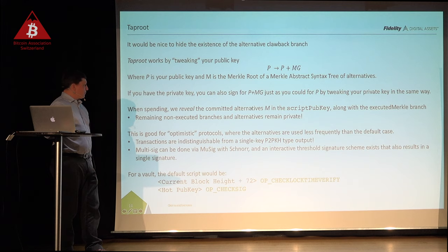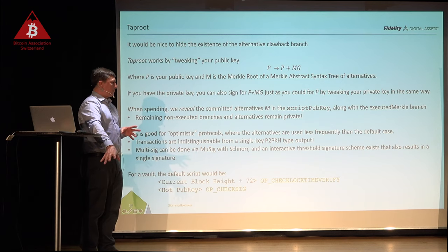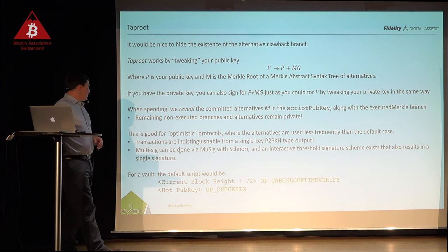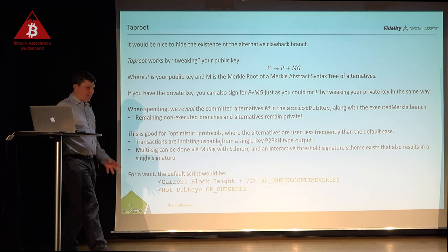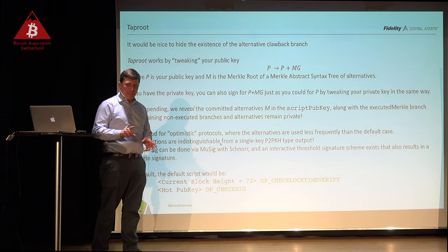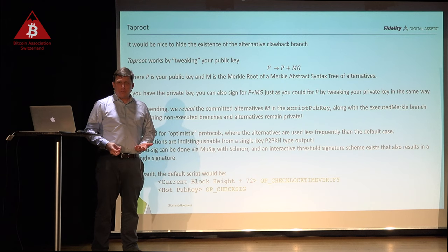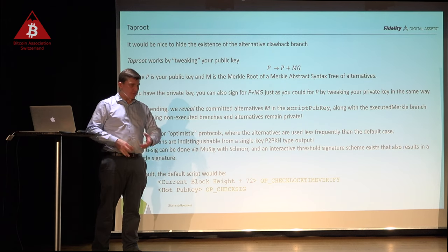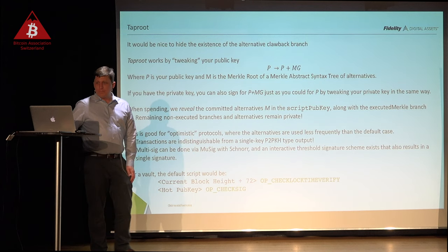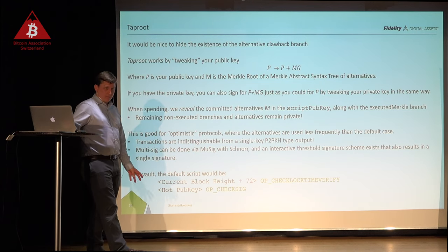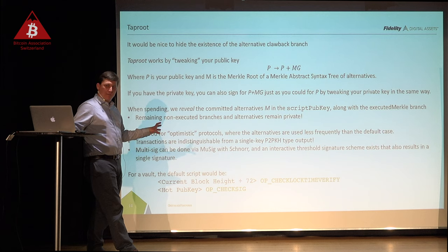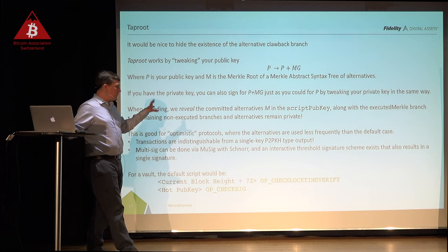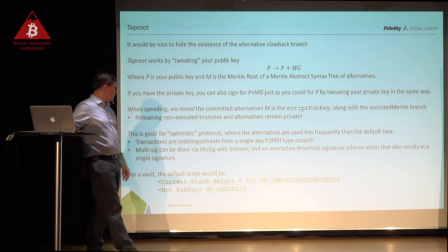The idea with Taproot is that I can have a tree of all kinds of logic — emergency conditions used rarely — but by tweaking my public key it's just another public key. Nobody can tell I did this because it looks like a regular public key. This is an optimistic protocol — most of the time I let the time lock expire and send to the person who requested a withdrawal. The transactions resulting from this are indistinguishable from a one-key pay-to-pubkey-hash transaction, which is really good for privacy. The default vault script would include a check time lock and a check sig.